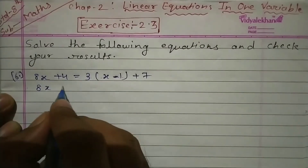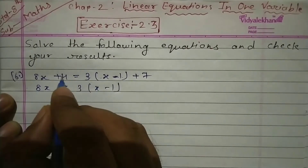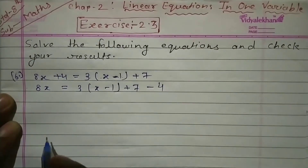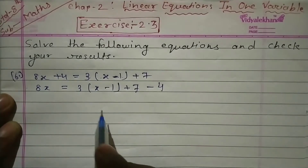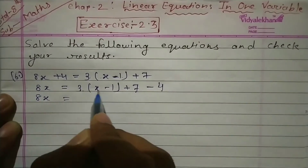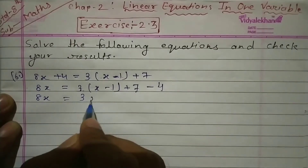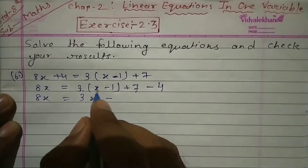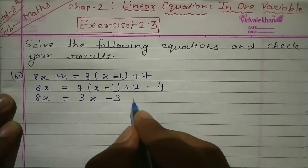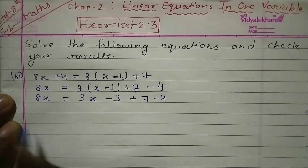8x को as it is रखो। 4 को इधर ले जाओ तो minus में आ जाएगा। 3(x - 1) को expand करो: 3 का multiply x के साथ 3x, और 3 का multiply minus 1 के साथ minus 3, plus 7। तो equation बनती है: 8x = 3x - 3 + 7 - 4।